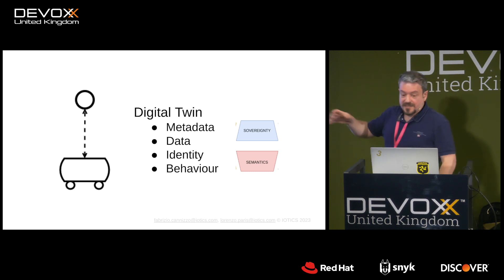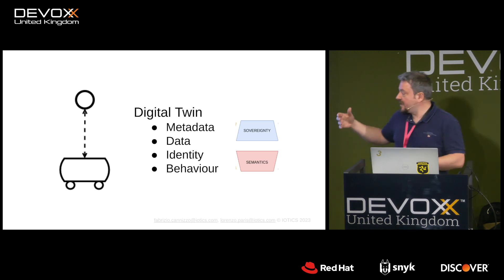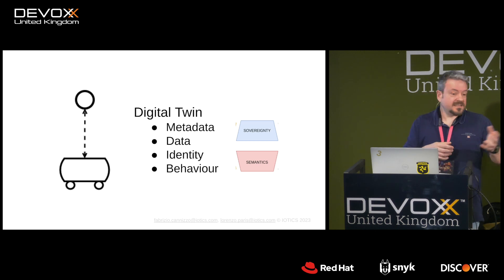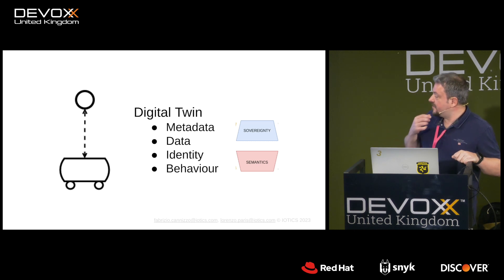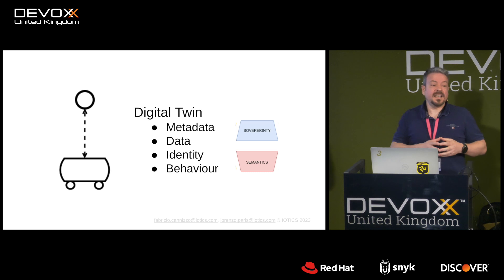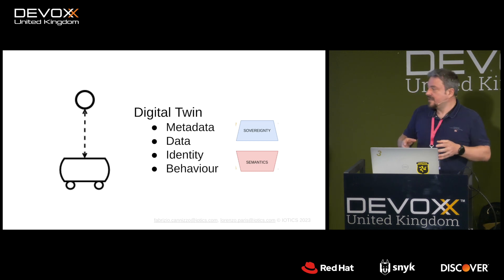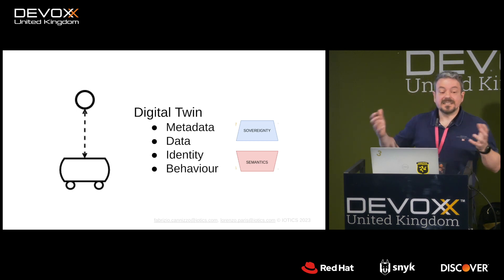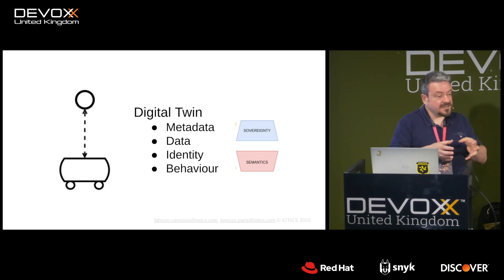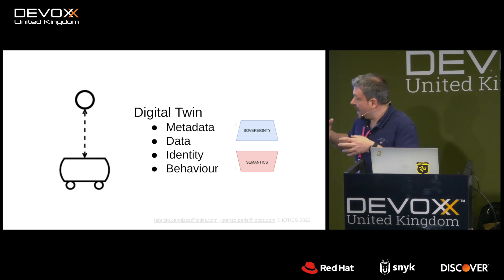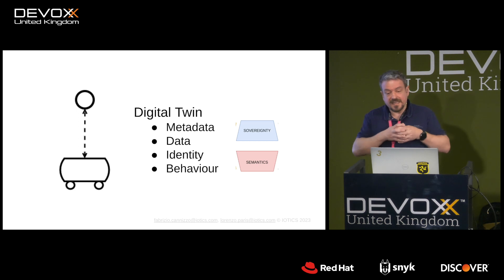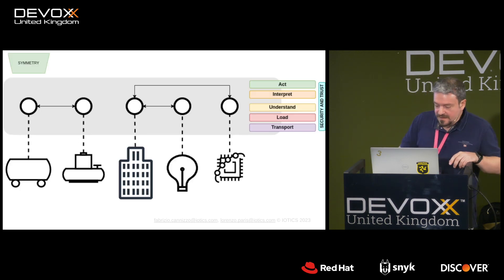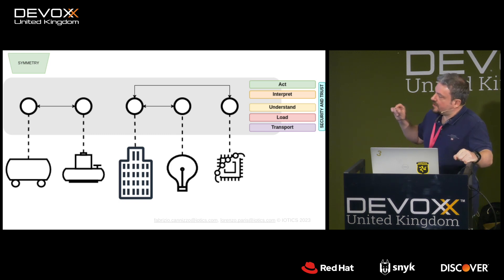Sovereignty and semantics are key. Semantics — how we model data and metadata using semantic technologies — enable whoever interacts with a digital twin to understand what the data means. Sovereignty is critical for security and trust: a car driving anywhere in the world can't rely on a third party to guarantee trust, so the identity must be sovereign and sit within the device itself.